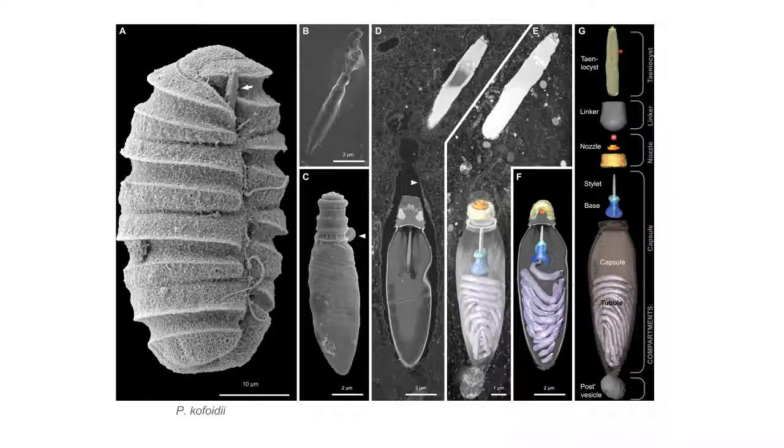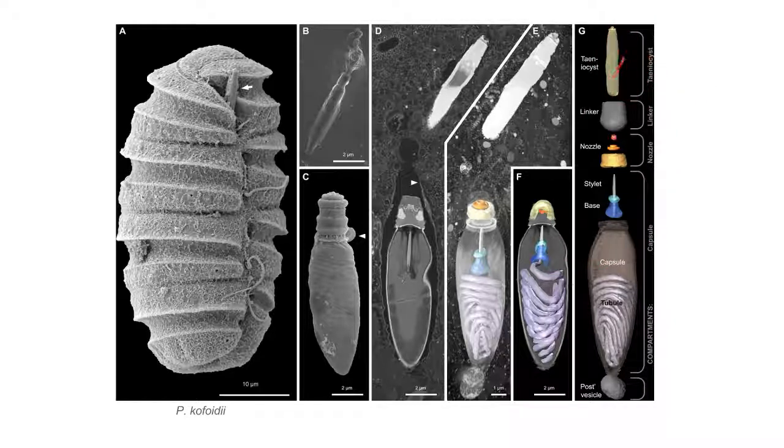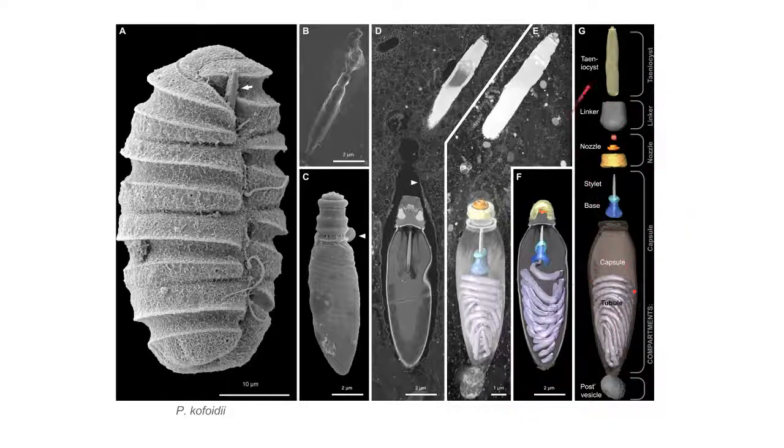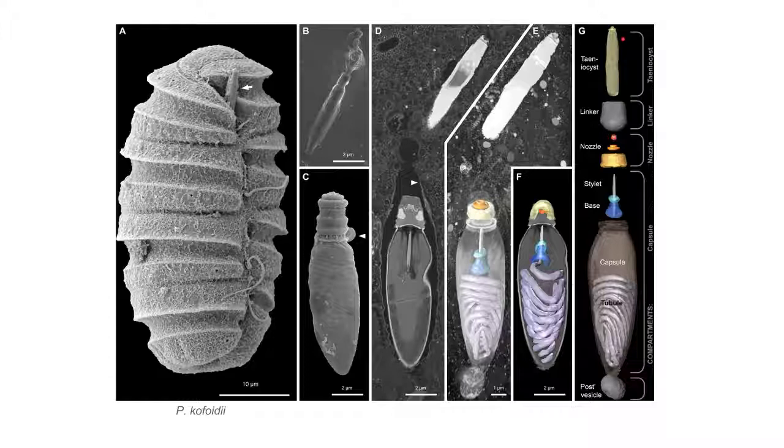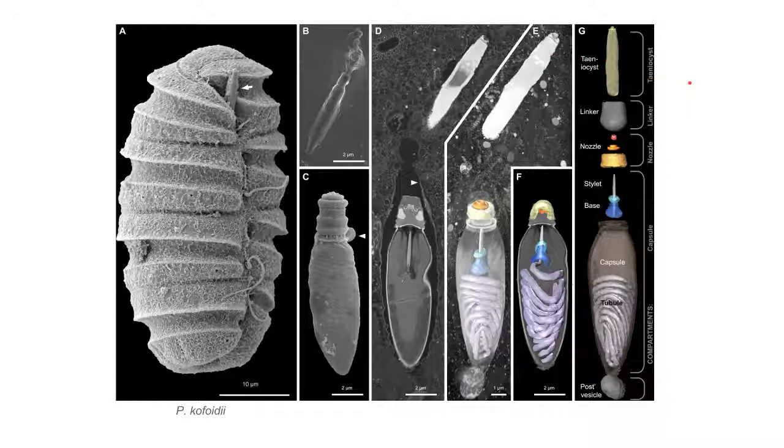The second ballistic component of this organelle complex is this taniocyst. This taniocyst is launched similarly to this tubule, except it functions differently in that it seems to adhere to the cell and act as kind of a towline.